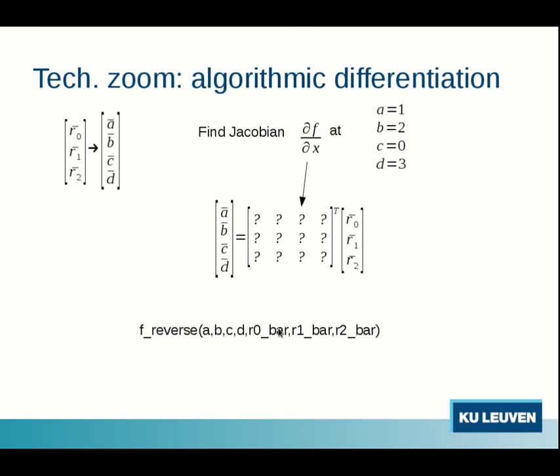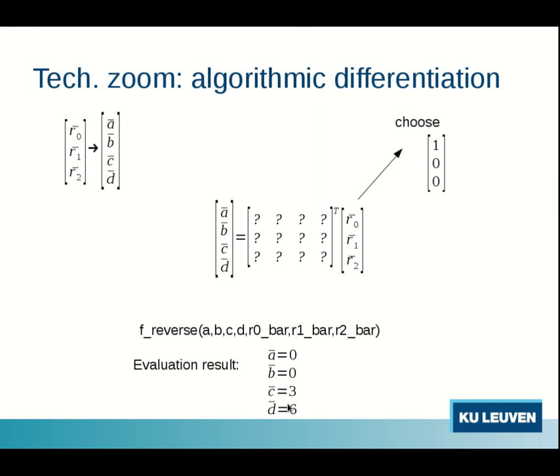So this means that we can go evaluate our reverse function with the original inputs ABCD and the bar quantities. So the size and shape of the original outputs. We can do one zero zero. And the numbers we get due to the transpose they will be placed on the row. So by doing one reverse sweep with the slice of the unit matrix we obtain one row of the Jacobian. As such. And those are the same numbers appearing from before.